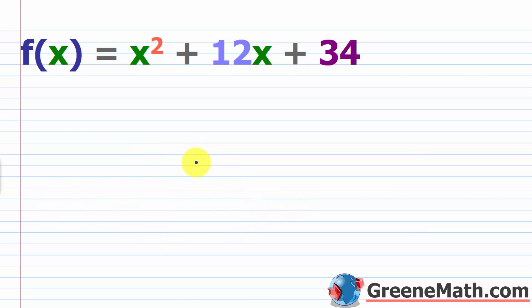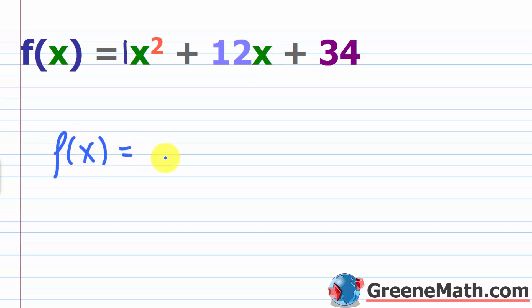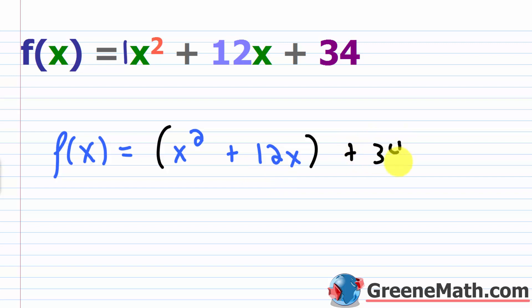We can create this from the completing the square process. The first thing you need to make sure of is that the coefficient on the x squared term is one — in this case, that's already done for us. The next thing you want to do is group your x squared term and your x to the first power term together. So I have f(x) = (x² + 12x) + 34.